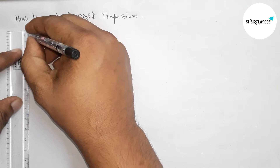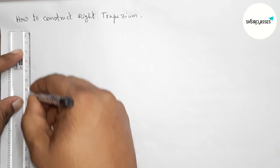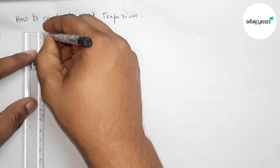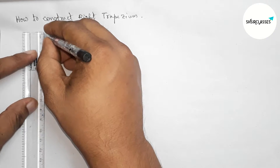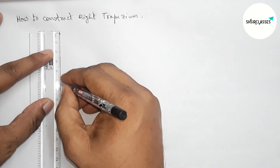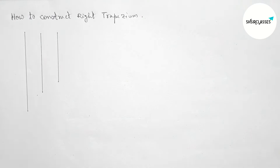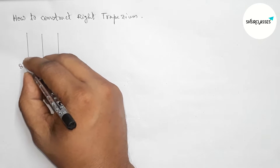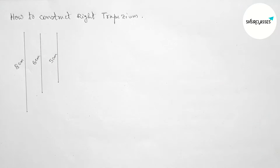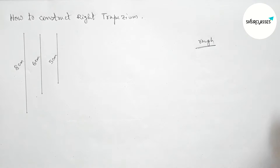First, drawing a line segment of length 8 centimeters, another line segment of length 6 centimeters, and a last line segment of length 5 centimeters. So this is 8, this is 6, and this one is 5 centimeters. Now let's discuss some important notes.